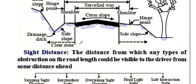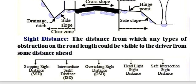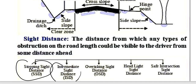Sight distance is the distance from which any obstruction on the road length is visible to the driver. There are several types of sight distance: SSD (Stopping Sight Distance), Intermediate Sight Distance, OSD (Overtaking Sight Distance), Headlight Sight Distance, and Safe Intersection Sight Distance.